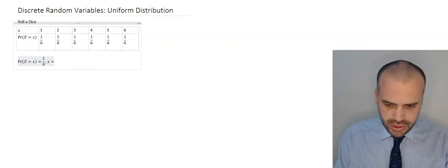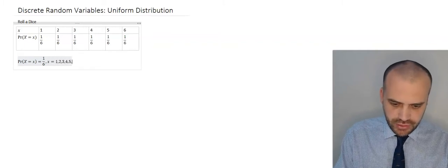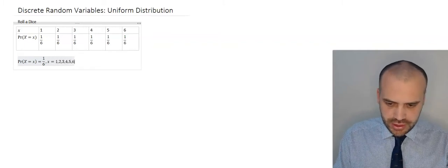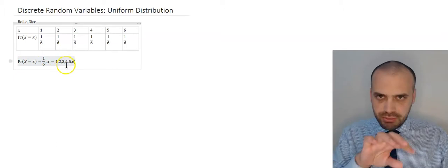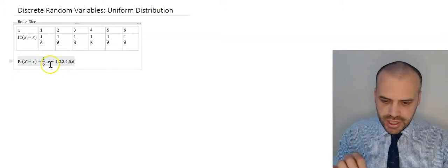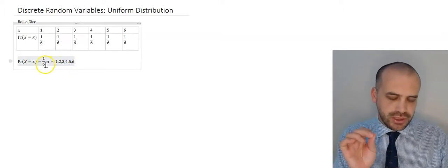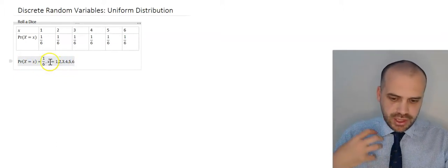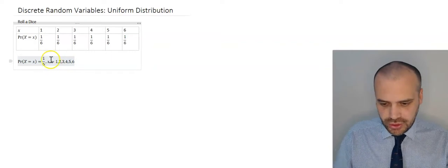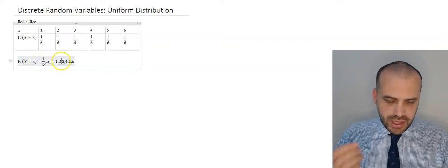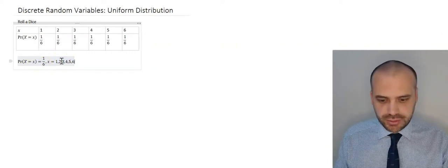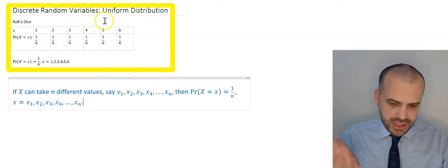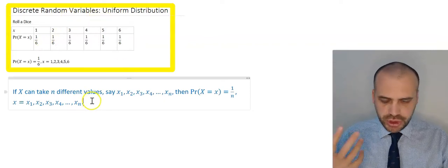So we just need to list 1, 2, 3, 4, 5, 6. This little bit of mathematical notation perfectly describes the event where you're rolling a dice and the probability of each of those values is equal.